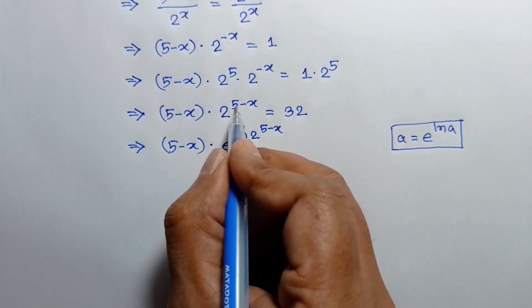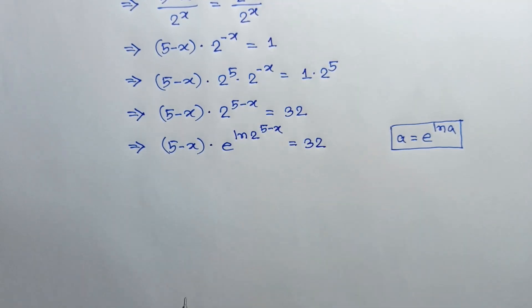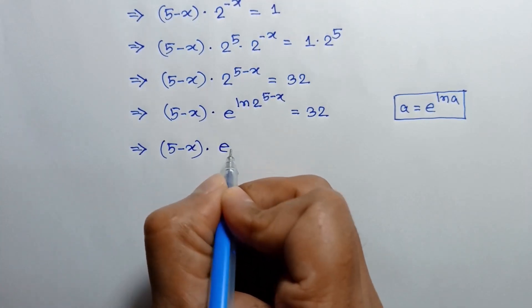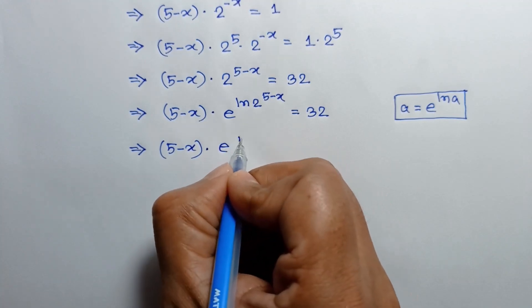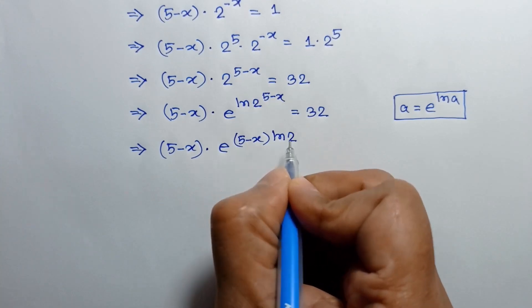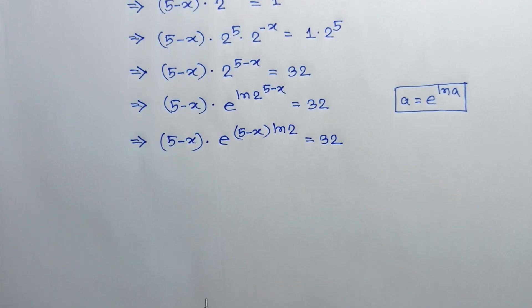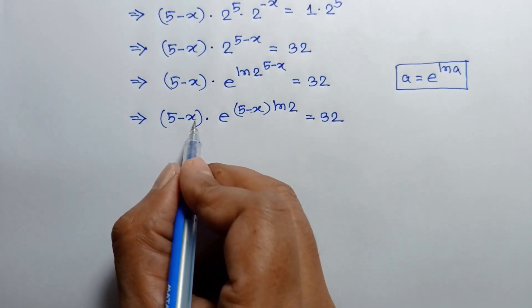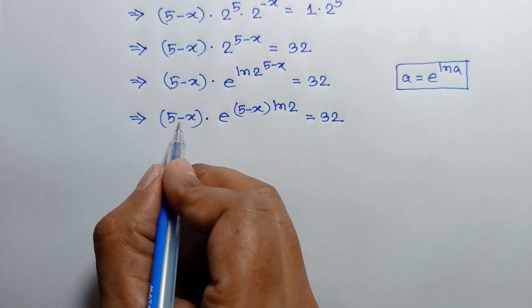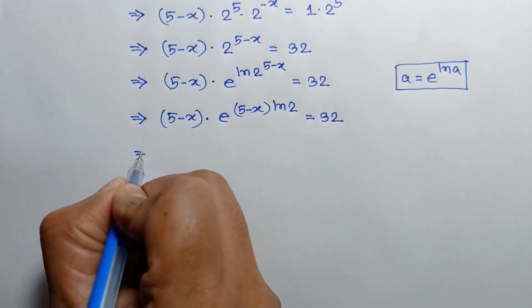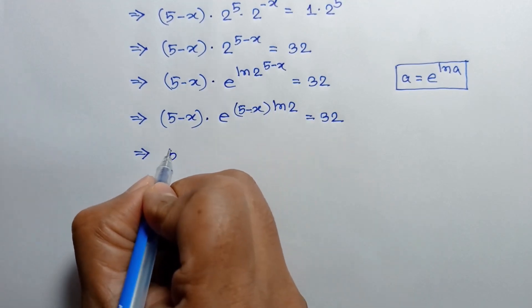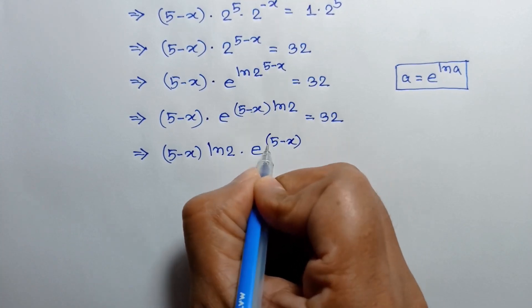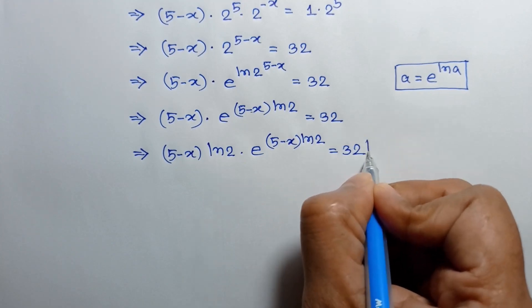We have 2 to the power (5 minus x) is equal to 32. Applying the law of logarithm, we can write (5 minus x) times ln of 2 is equal to 32, in the exponent of e. Now, the power of e is (5 minus x) ln 2 and the coefficient is (5 minus x). To make the power and coefficient the same, we multiply both sides by ln 2. Multiplying both sides by ln 2, we get (5 minus x) ln 2 times e to the power (5 minus x) ln 2 is equal to 32 ln 2.